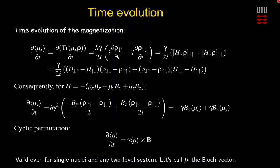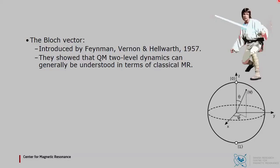Importantly, this equation is valid even for individual nuclei, and for any two-level system. Since the expectation value of the dipole moment behaves classically even for individual nuclei, let's introduce the so-called Bloch vector μ. This allows us to return to the light side while staying true to quantum mechanics. So what is the Bloch vector that is here demonstrated by Luke Skywalker? It was introduced by Feynman and co-workers back in 1957. They showed that two-level systems can in general be understood from classical magnetic resonance.